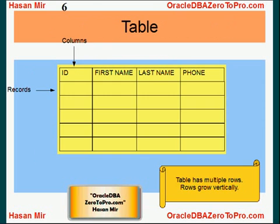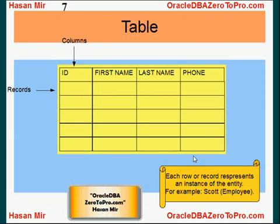Table stores information about entities. So when you create a table, you want to store information about a certain entity in the database. For example, you're going to create a table employees to represent an entity employee. The table has multiple rows and, of course, rows can grow vertically. Rows are also known as records.